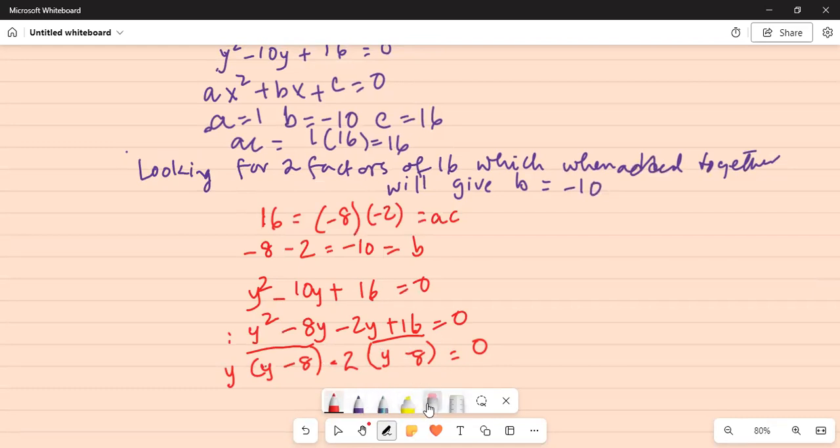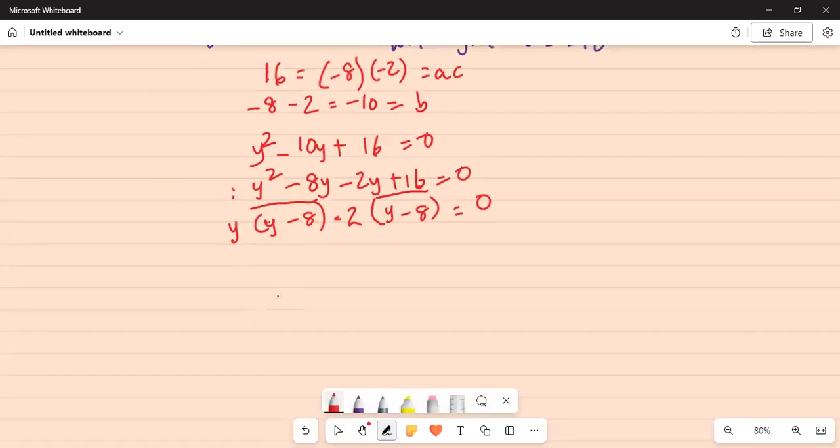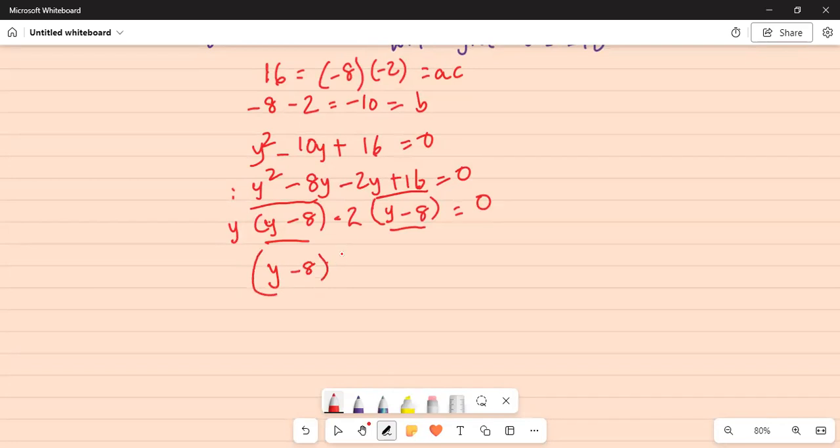y minus 2 times minus 8 is positive 16. From both the terms the common factor is y minus 8. So y minus 8 from the first one I have y left over from the second term I have minus 2 left over equal to 0.